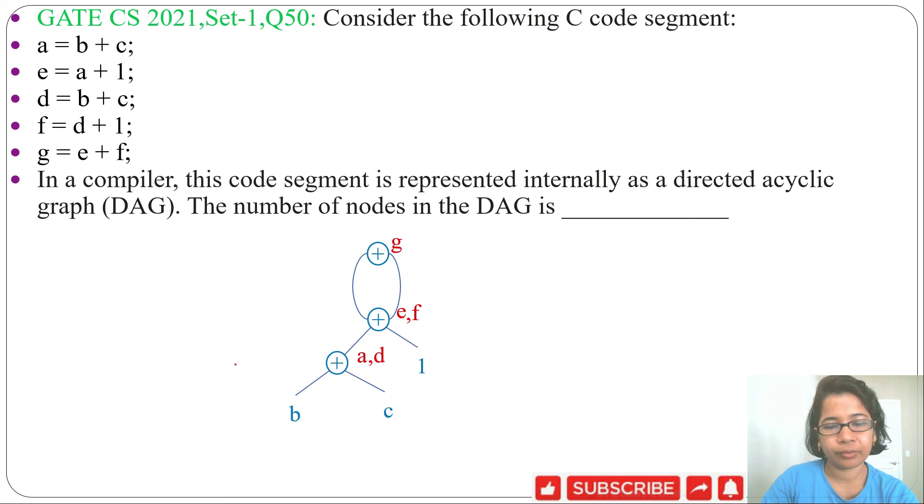Now DAG is constructed. Next, we need to count the number of nodes. Here: one, two, three, four, five, six. There are six number of nodes. So answer will be six.